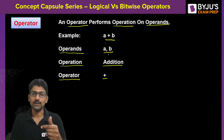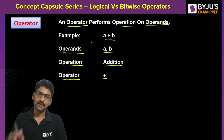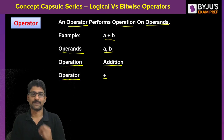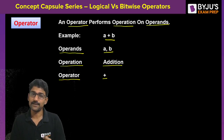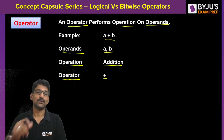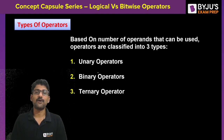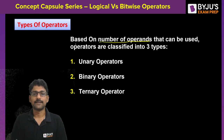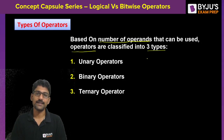In this example we are using two operands, a and b. But is it always required to use two operands? No. Based on the number of operands used, operators are classified into three types.